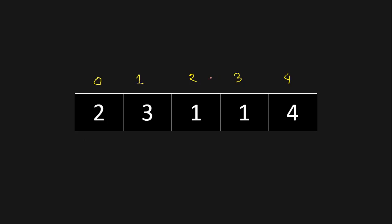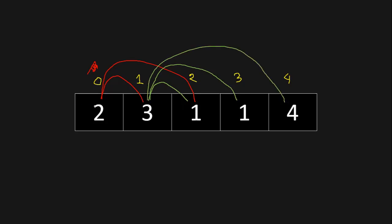We're initially positioned at index 0, where we have a maximum jump length of 2. So from index 0 we can go to index 1 or index 2. If we go to index 1, from there we can make three choices: we can go to index 2, index 3, or index 4. So from index 0, jumping to index 1, and then to index 4, we can reach the last index of this array.